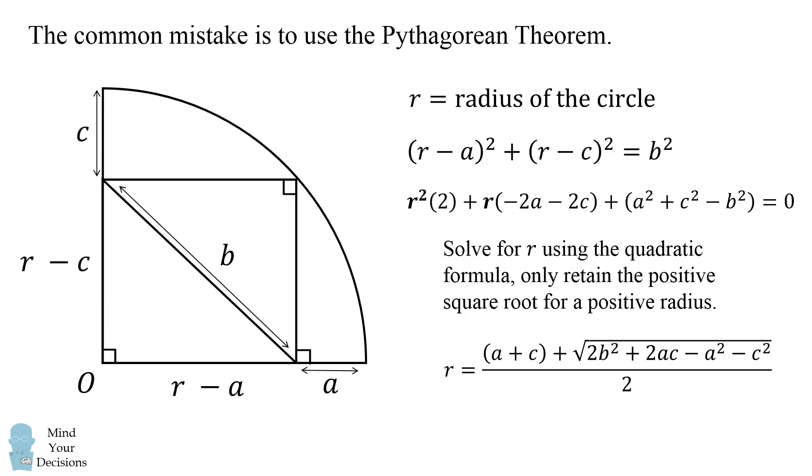We end up with the following complicated formula for r in terms of a, b, and c. So this is a valid formula, but it's not the simplest formula. So it's the wrong answer to this puzzle.